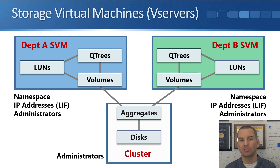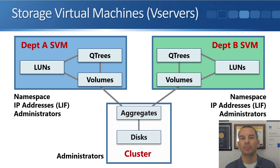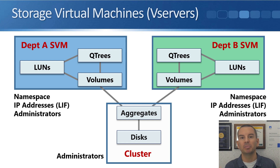SVMs are not just used when different departments want separate storage systems. Another reason for creating separate SVMs would be to separate client access protocols — for example, an SVM for iSCSI and an SVM for NFS from the same department. That's optional; you could run both in the same SVM or split them into separate SVMs, whichever is easiest for management. SVMs are also used by cloud providers to give separate customers their own isolated storage.